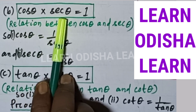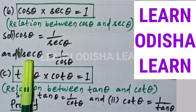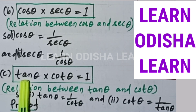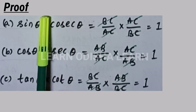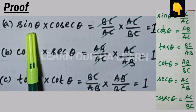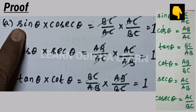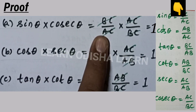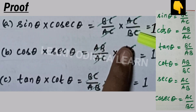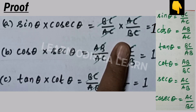The second relation is cos theta multiplied by sec theta equals 1, giving cos theta equals 1 by sec theta and sec theta equals 1 by cos theta. The third relation is tan theta multiplied by cot theta equals 1. Proof: sin theta is BC by AC and cosec theta is AC by BC. Multiplying them, BC and BC cancel, AC and AC cancel, giving 1. Similarly, cos theta is AB by AC and sec theta is AC by AB — AB and AC cancel to give 1.